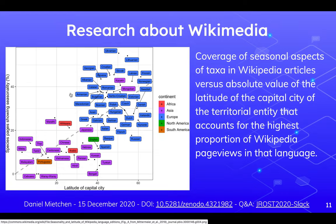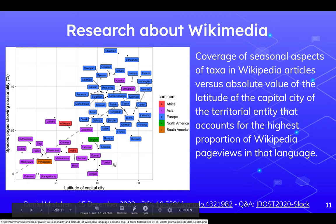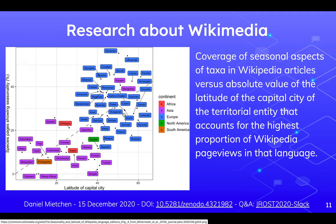Research about Wikimedia is actually largely focused on Wikipedia, and within that largely on the English Wikipedia, but there are a good number of exceptions. One of them is where researchers looked at articles in multiple Wikipedias about biological species and then looked at how seasonal variation in the abundance or behavior of those species is covered in different Wikipedia languages. They looked at where on the planet, especially in terms of latitude, those languages are primarily spoken, and correlated that with Wikipedia page views in those languages. You can see that there is some sort of a correlation going on.